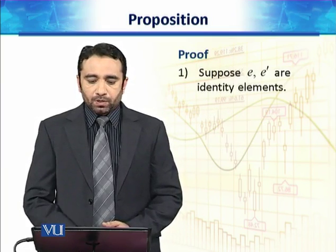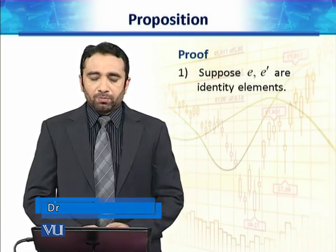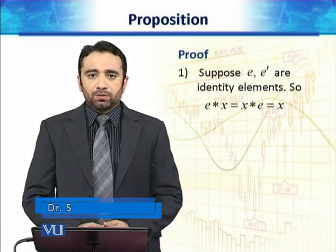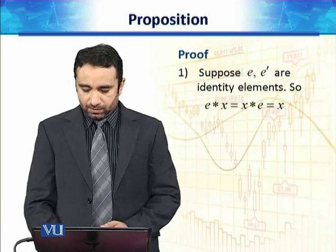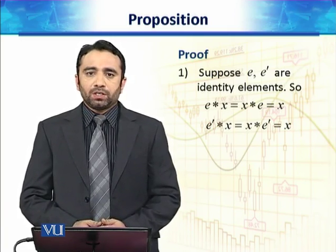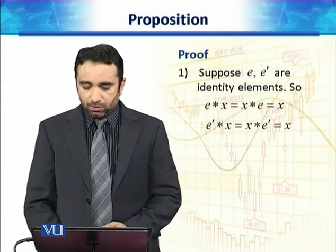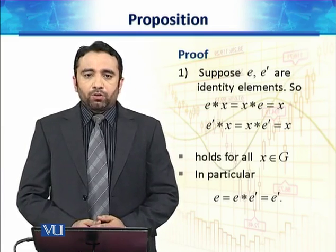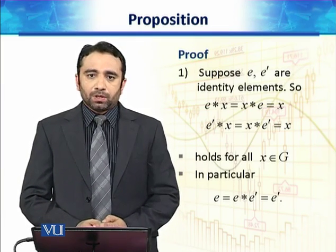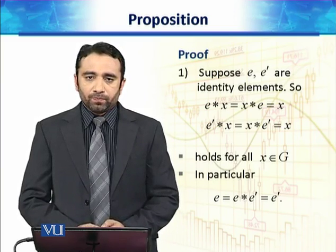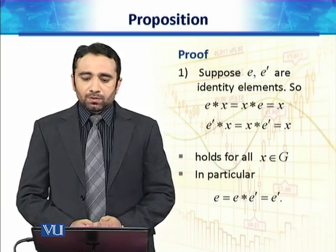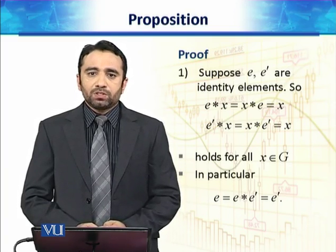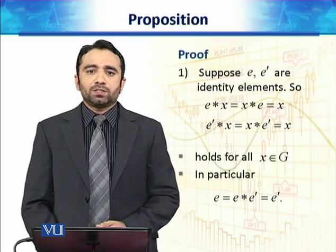To prove this result, suppose there are two identity elements E and E'. If E is identity then E star X is equal to X star E is equal to X for all X belongs to G. In particular, if we replace X with E' in the first equation and X with E in the second equation and then equate these two equations, then we will have E is equal to E star E' is equal to E'. So both identities are same.